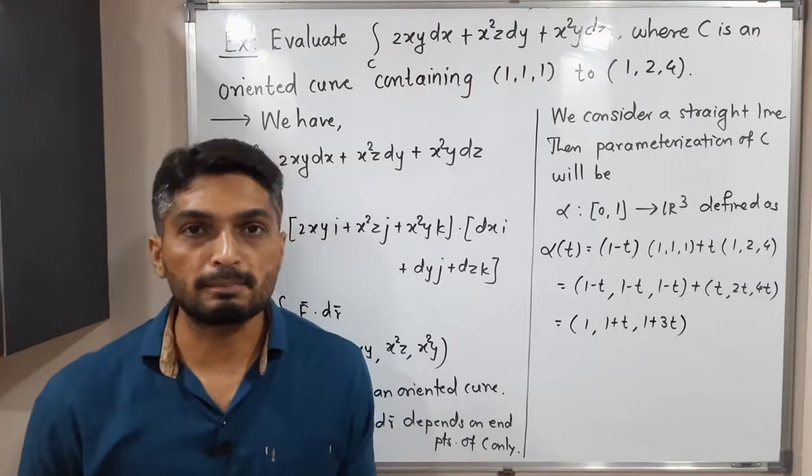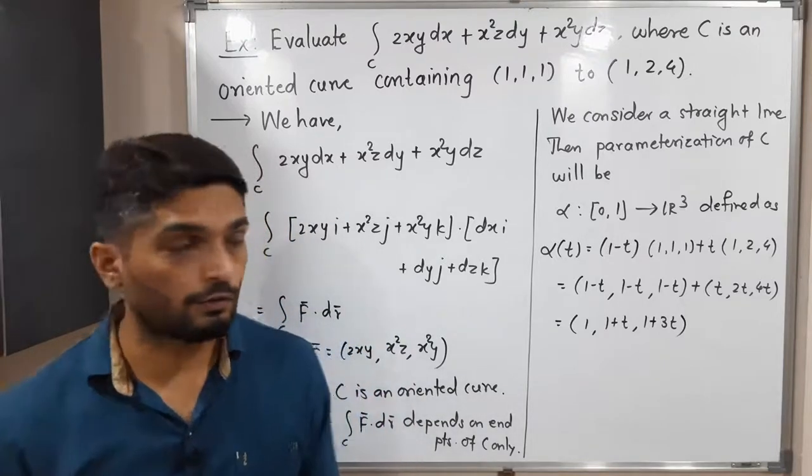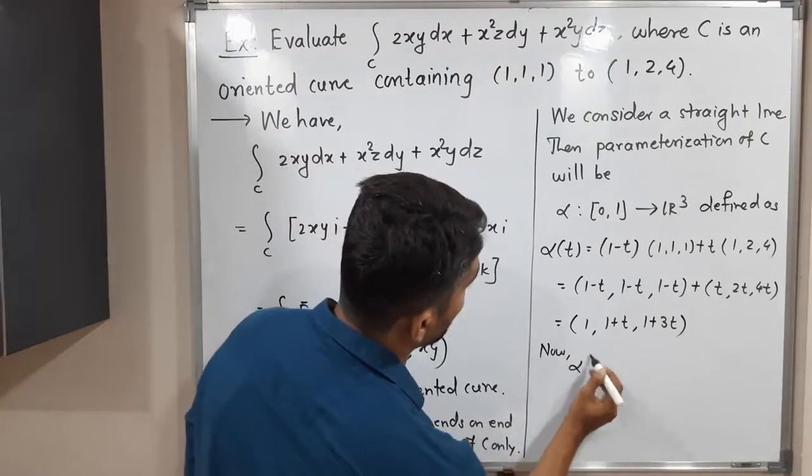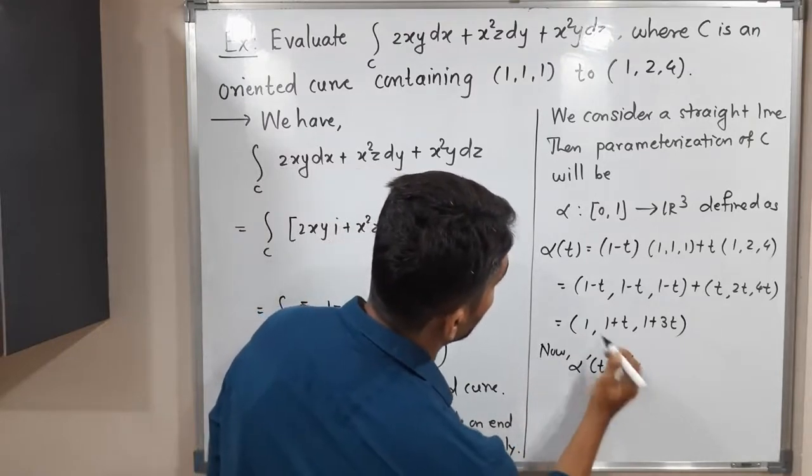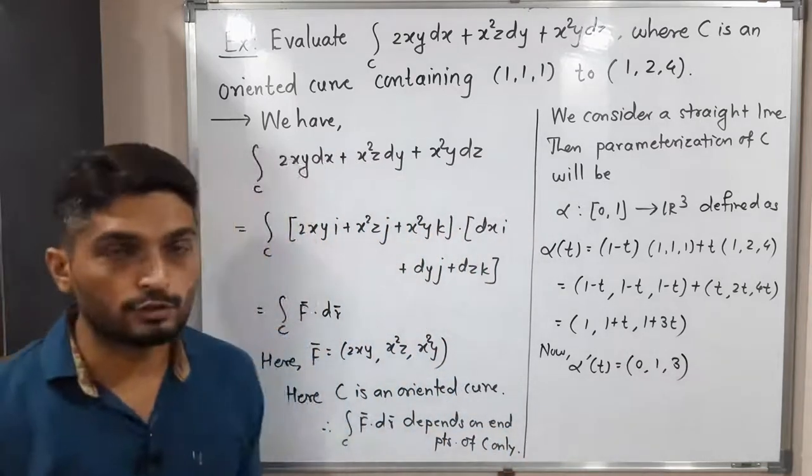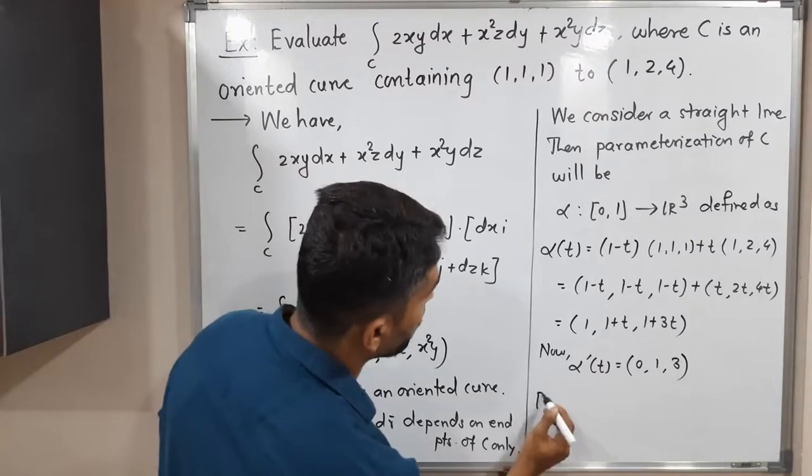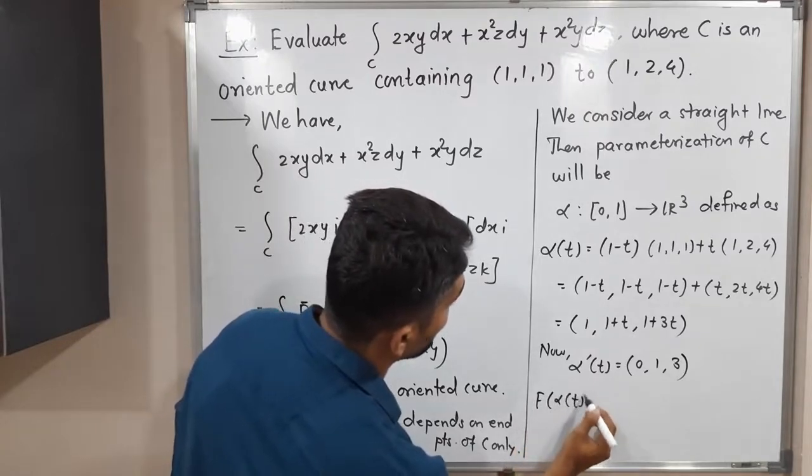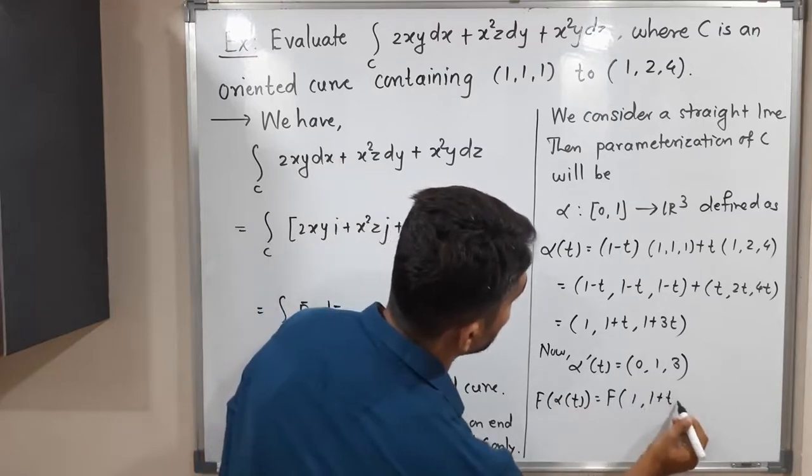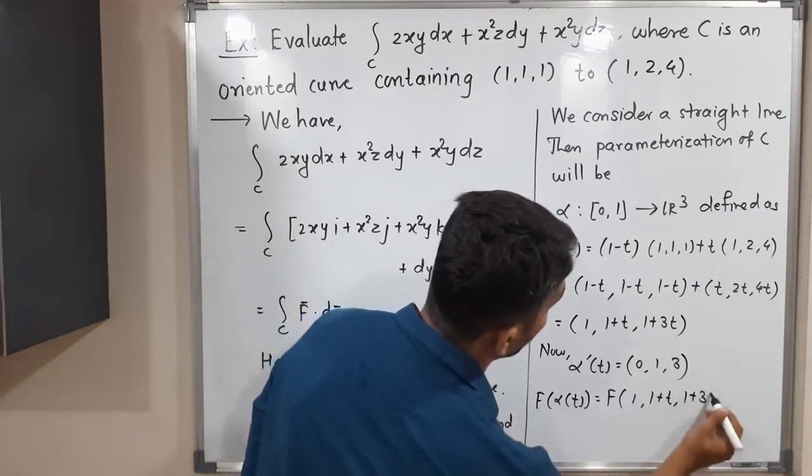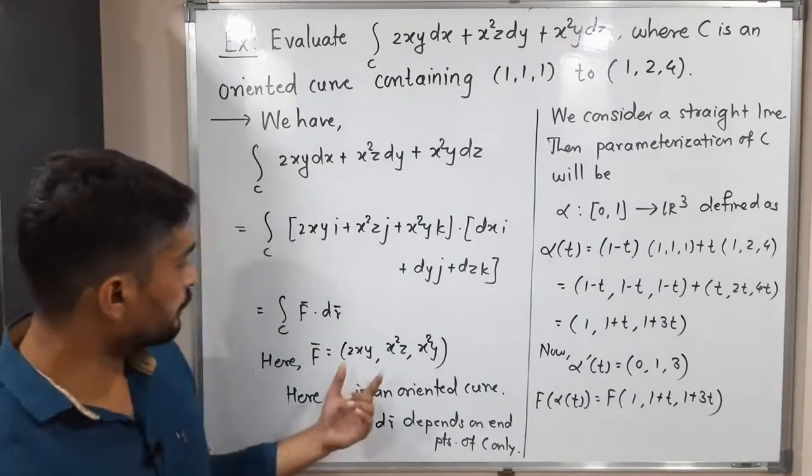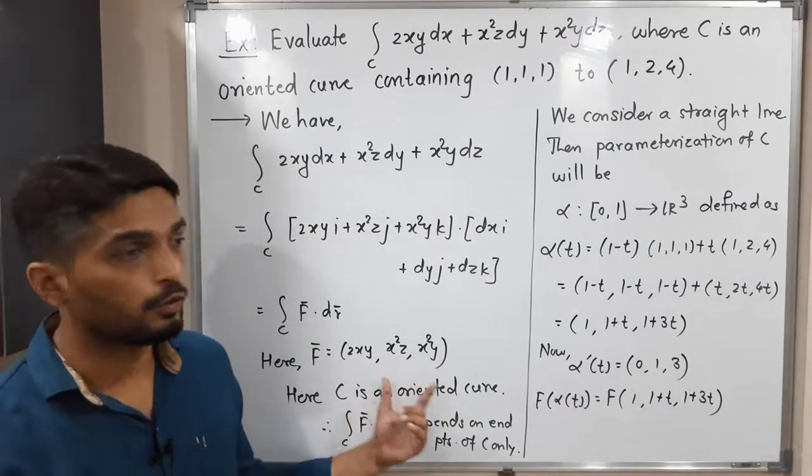After that, we will find some basic things just like alpha dash of t, F of alpha of t. Now, alpha dash of t—that means simply we find its derivative. Derivative will be 0, derivative is 1, derivative is 3. So this is our alpha dash of t. Now F of alpha of t, which is equal to F of—what is our alpha of t here? (1, 1+t, 1+3t). After that, we are applying F. What is definition of F? This one. So this definition I should follow to find its value.